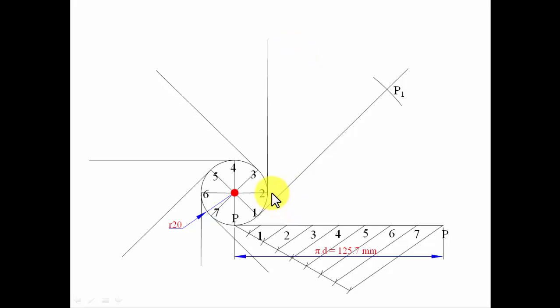This much portion of the string has come into contact, so what's remaining is from two to P. With two as the center, cut an arc—this is P2. From three to P3 as center, cut an arc. From four to P4 as center, cut an arc.